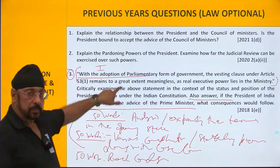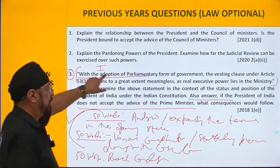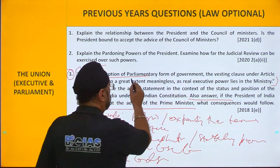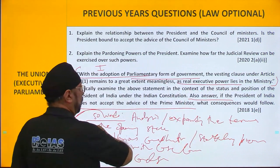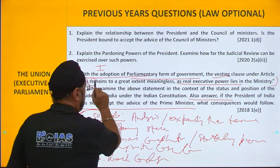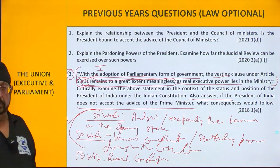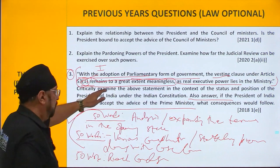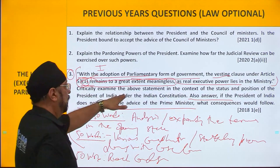Now, when it comes to this particular question — the first part we have explained: what is parliamentary form of government, number one; real executive power lies in the ministry; then the vesting clause. Don't write anything about this now, and don't give your judgment at this stage in the opening paragraph.